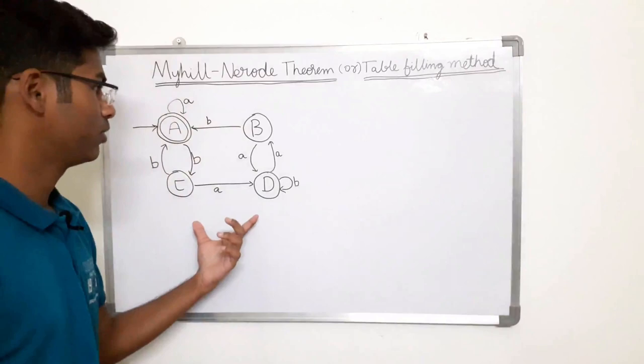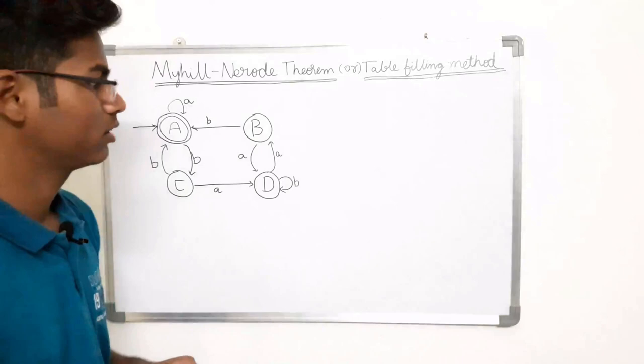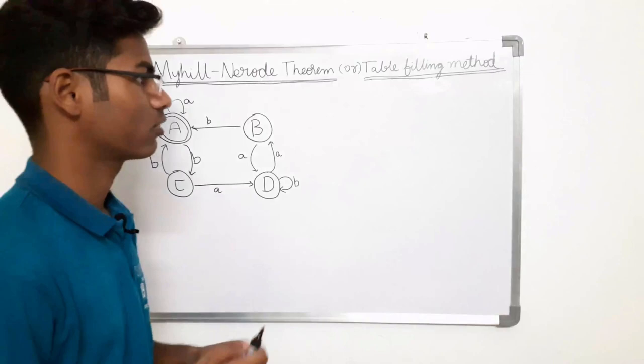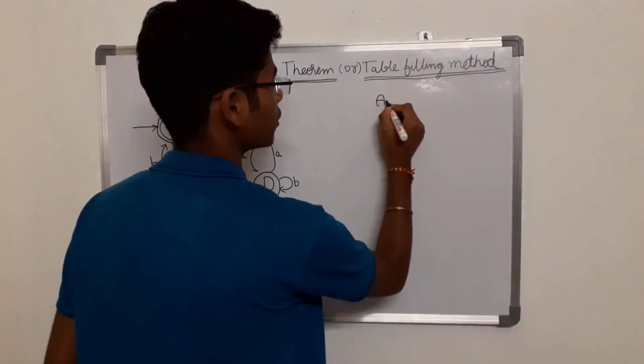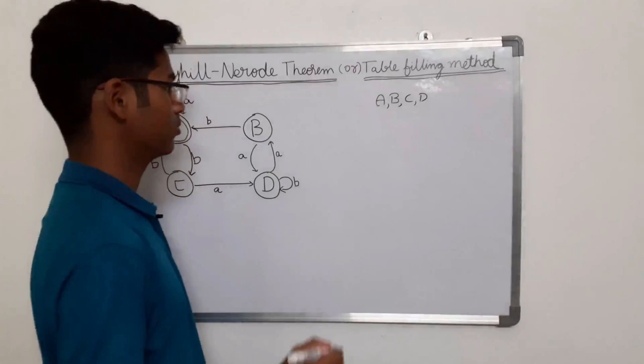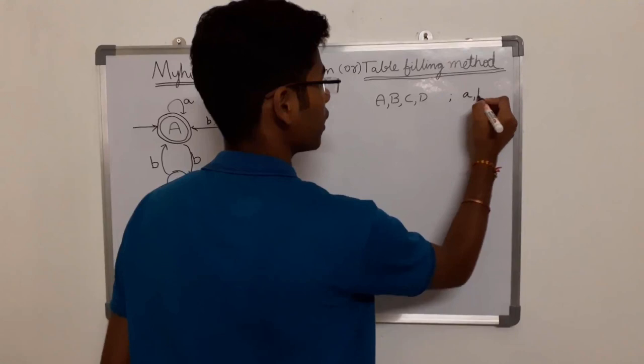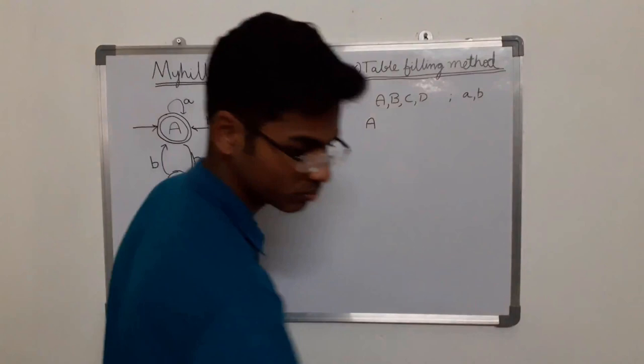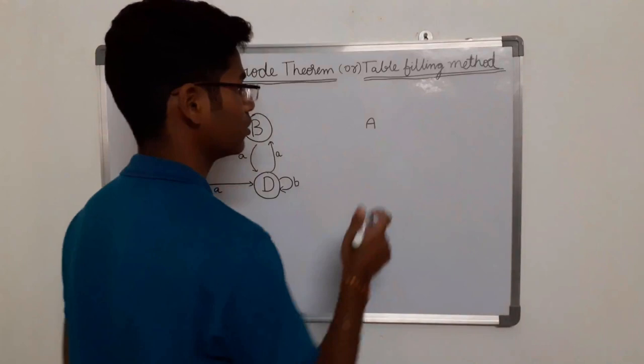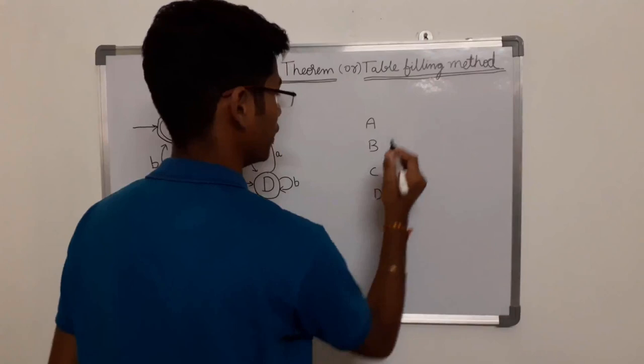The question is: minimize the following DFA using the Myhill-Nerode theorem or table filling method. To solve this problem, the basic step is to draw a transition table. In our question, there are four finite states: A, B, C, and D, and two input symbols A and B. The transition table has states A, B, C, D and two input symbols.